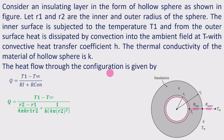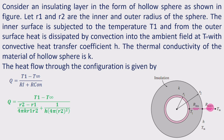The heat flow through this configuration of the hollow sphere is given by q equal to T1 minus T∞ divided by the total thermal resistances. The first resistance R_i is the resistance of the insulating layer, that is the hollow sphere resistance, plus R_convective, the convective resistance. The ratio of thermal potential difference to thermal resistance gives the rate of heat transfer for composite systems.